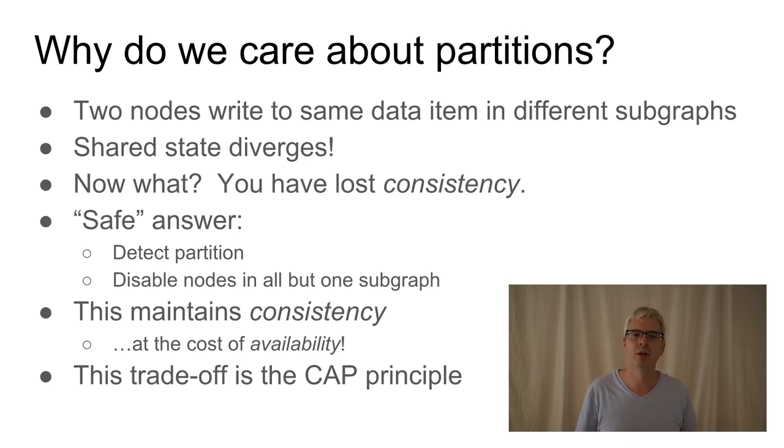For example, if the system we're working on is a comment system like Facebook, where we have posts and users want to attach comments to them, our users might be talking to different nodes. If we partition our distributed system into two subgraphs, then the state could diverge. Users talking to one subgraph might add comments to a posting, and users talking to another subgraph might add comments to the same posting, and they wouldn't be able to see each other's comments. So the thread of conversation would diverge.